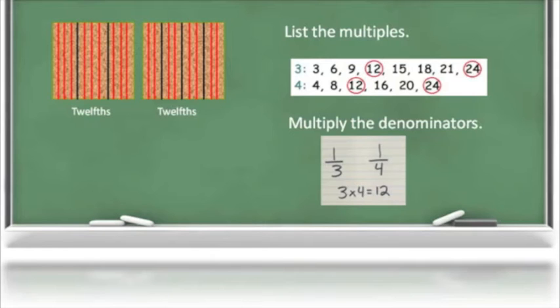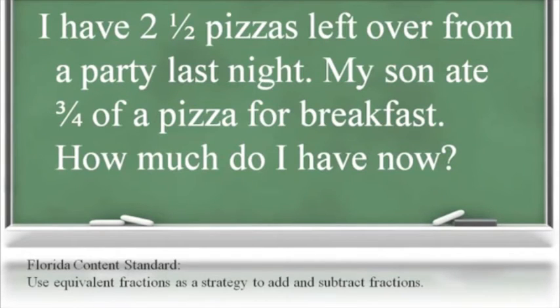Once the students have a firm understanding of how to rename fractions with a common denominator, they will need to apply this to real-world situations in which they have to add and subtract these amounts. To solve the problems shown, the students would first determine a reasonable estimate to compare their final solution with. In this case, the students could round each fraction or mixed number to its nearest benchmark of zero, one-half, or the next whole.